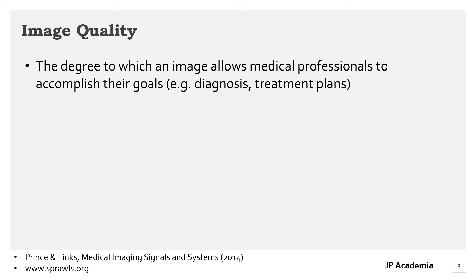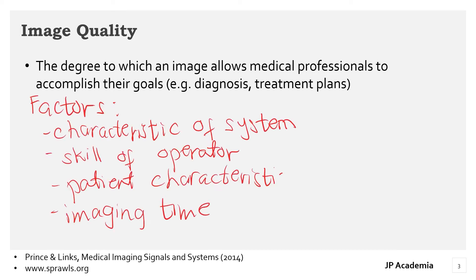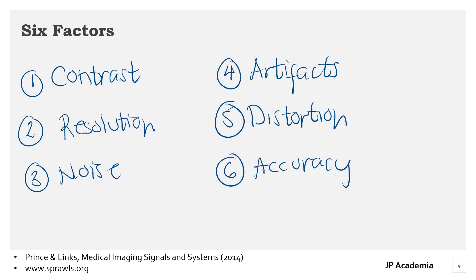When we talk about the quality of a medical image, this is determined by the imaging method, the characteristics of the equipment, and the imaging variables selected by the operator. Image quality is not a single factor — it is a composite of at least six factors.